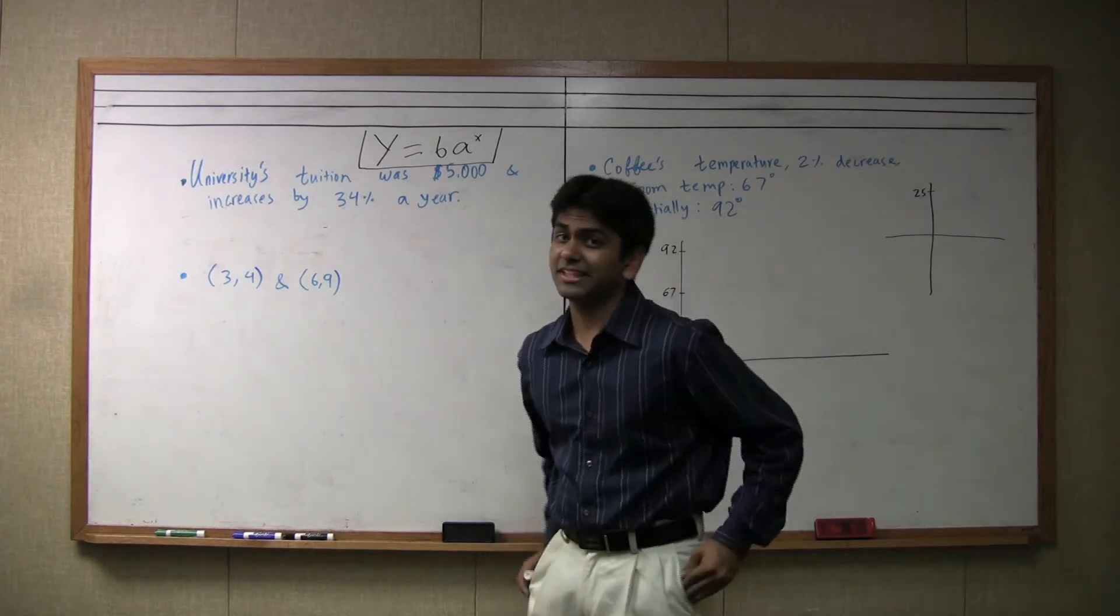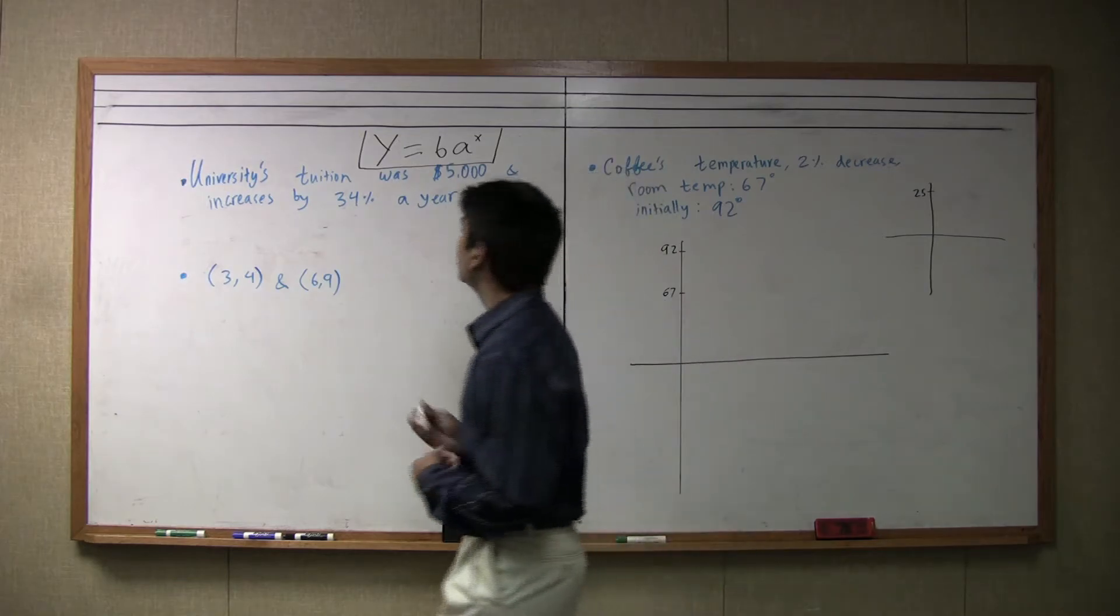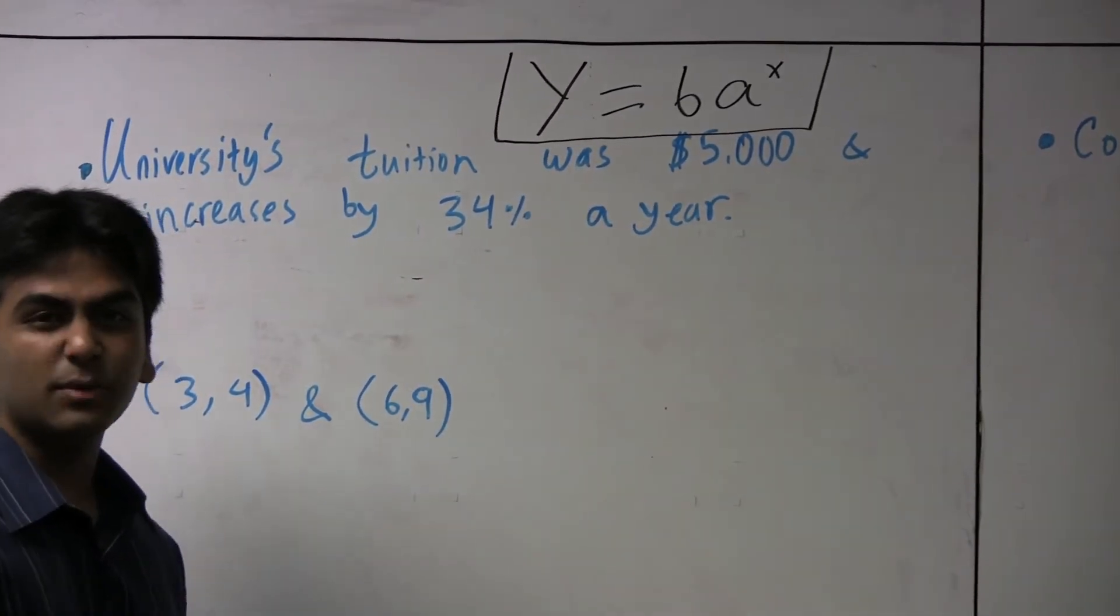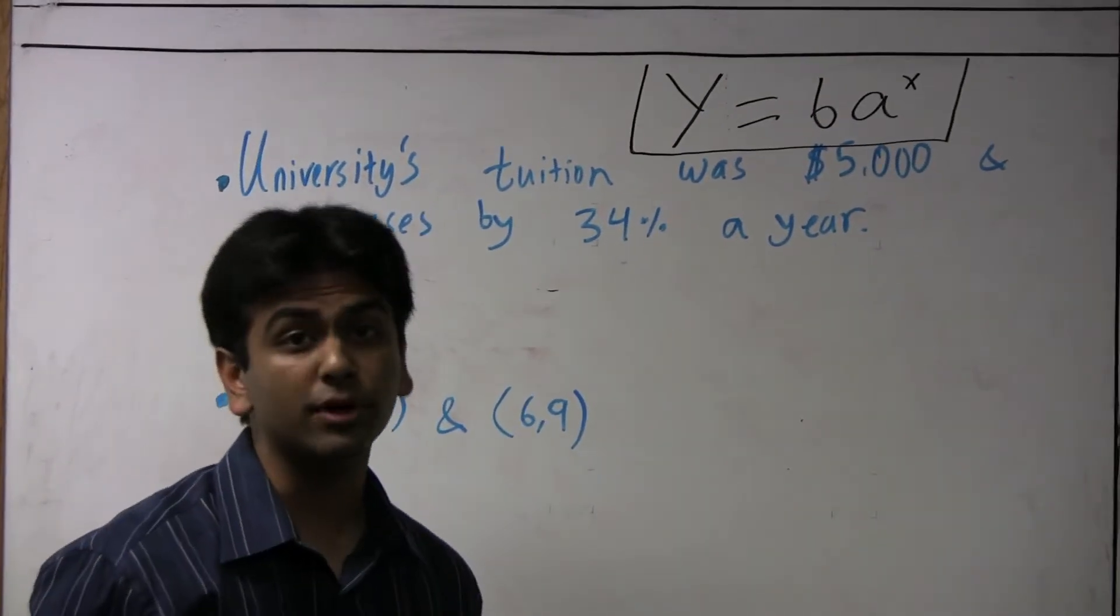Well, it means that you'll never see any of that money back. But it also means that the initial value, meaning B, is $5,000, and that the rate of increase is 34%, which makes a 1.34.